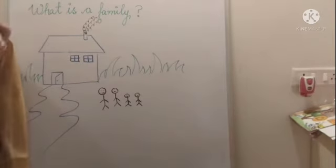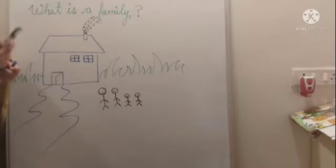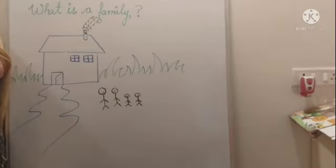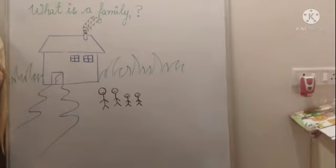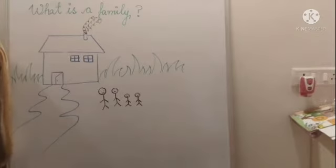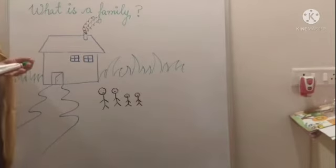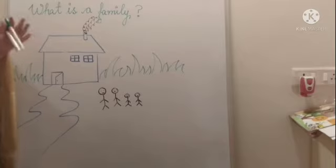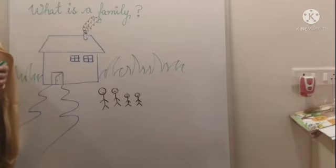So talking about what is a family — repeating again — a family is a group of people, two or more people living together in the same house under the same roof. Basically, it constitutes a family.